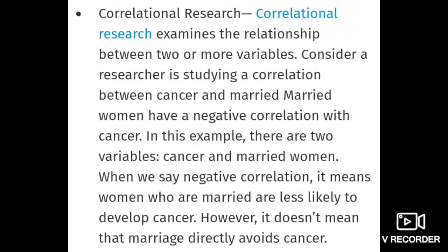The third sub-method of quantitative research is correlational research. If you have seen my videos, there are 24 types of research, and correlational research is one of them — it is also a part of quantitative research. Basically, in correlational research we check the relationship between two or more variables. It examines the statistical relationship between two or more variables.